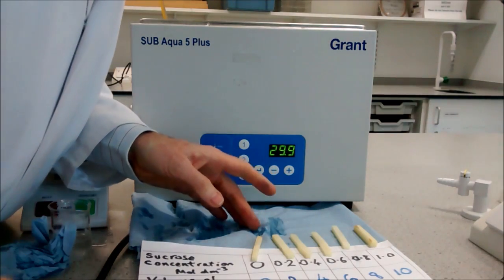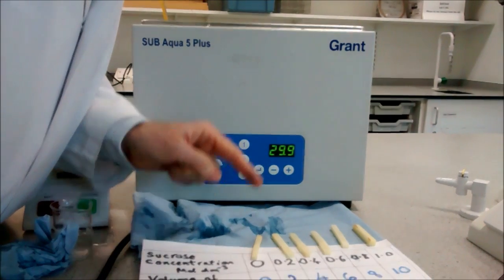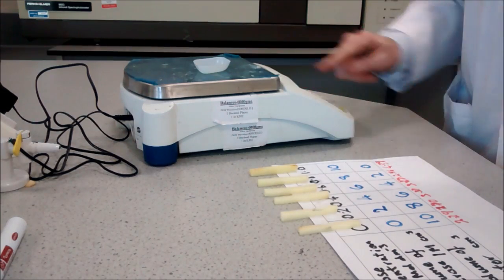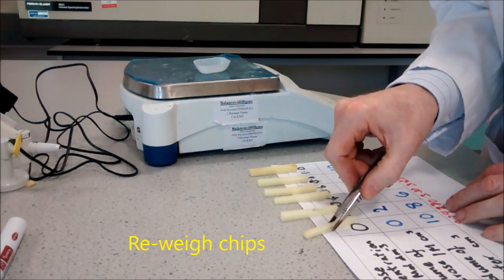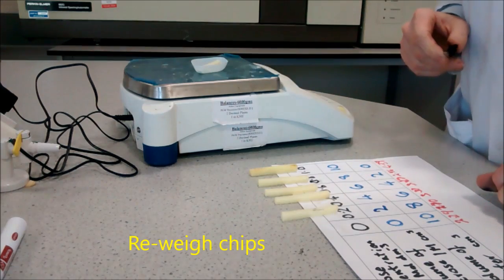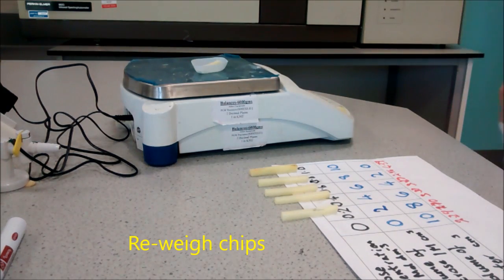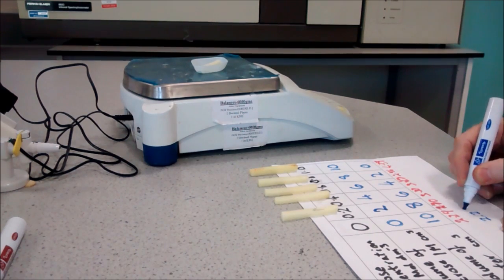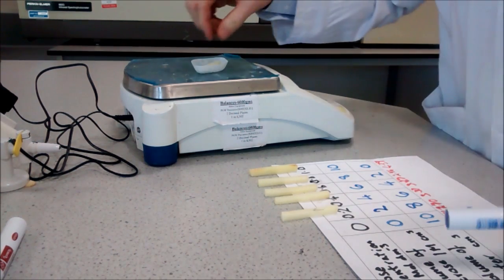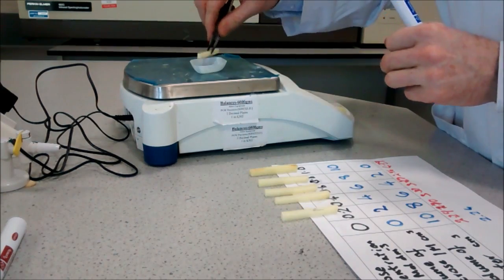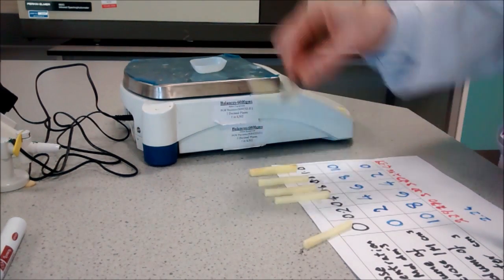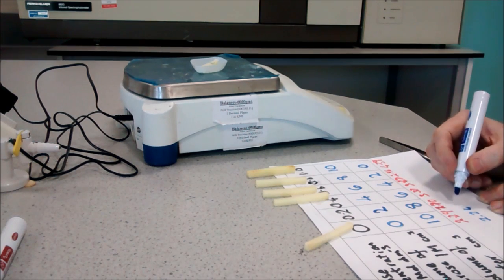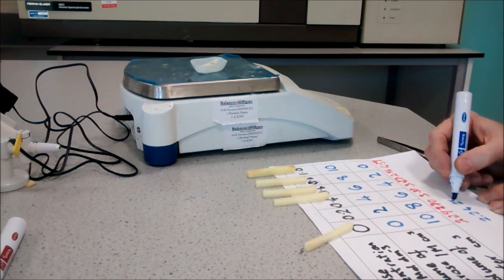Once you've dried all your chips, they need to be individually weighed. Check the tare of the balance so it reads zero. Take the first chip, place it in, and record the mass. Then the next one, recording it along with the previous values.